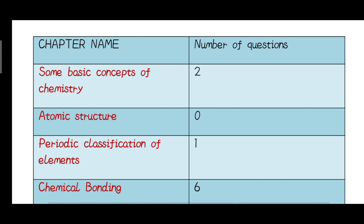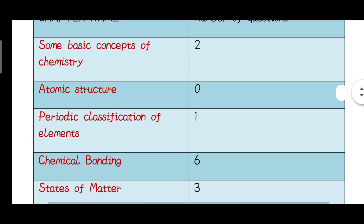Atomic structure is among the important chapters in chemistry. The next chapter is Periodic classification of elements. There is a question from the 2019 paper. Slater's rule is Question 2 — it covers the quantitative amount of shielding of electrons.